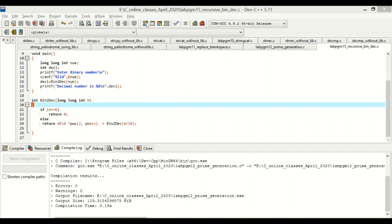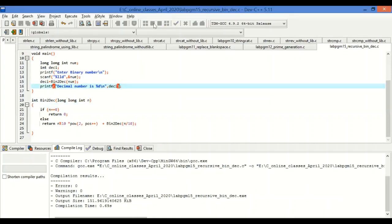Let me compile it. No errors. Execute it. Enter a binary number. I will enter 110. See the output. Decimal number is 6. This is how the recursive function works.